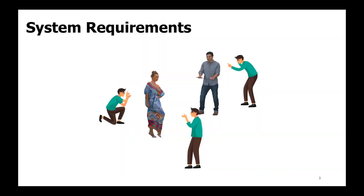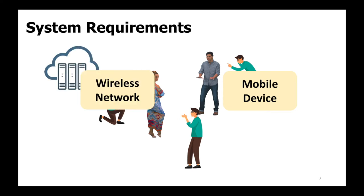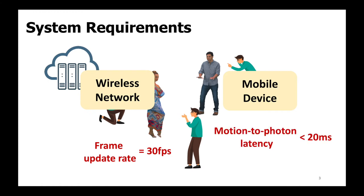To enable such applications, there are multiple system requirements. For users to move in six degrees of freedom, the devices should be fully mobile without being constrained by wires. The volumetric videos residing at the server have to be delivered through the wireless network to the client device. Since the content is generated at 30 fps, the frame update rate at the client should also meet 30 fps. On top of that, for users to really feel that the content is in 3D, the motion to photo latency for rendering should remain below 20 milliseconds.